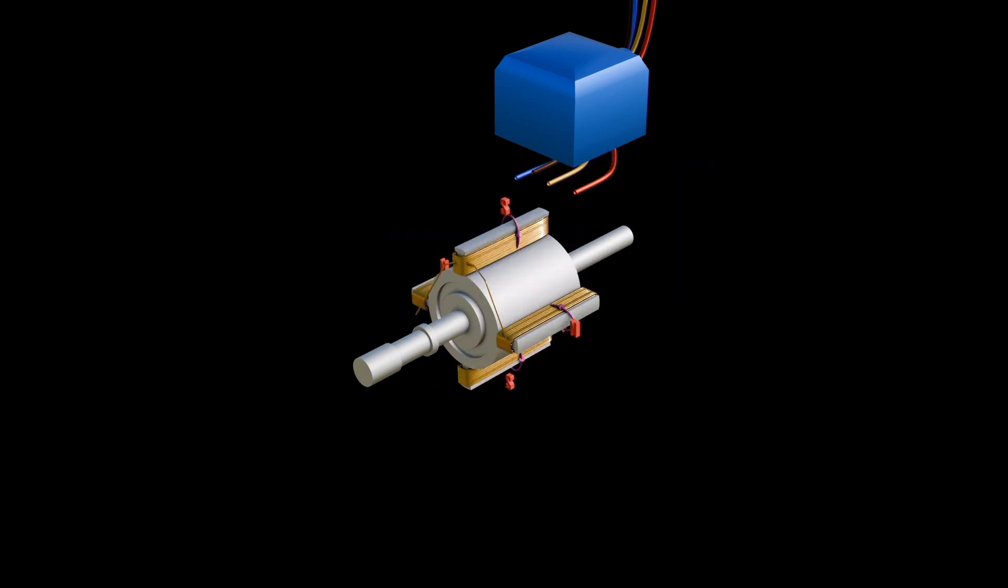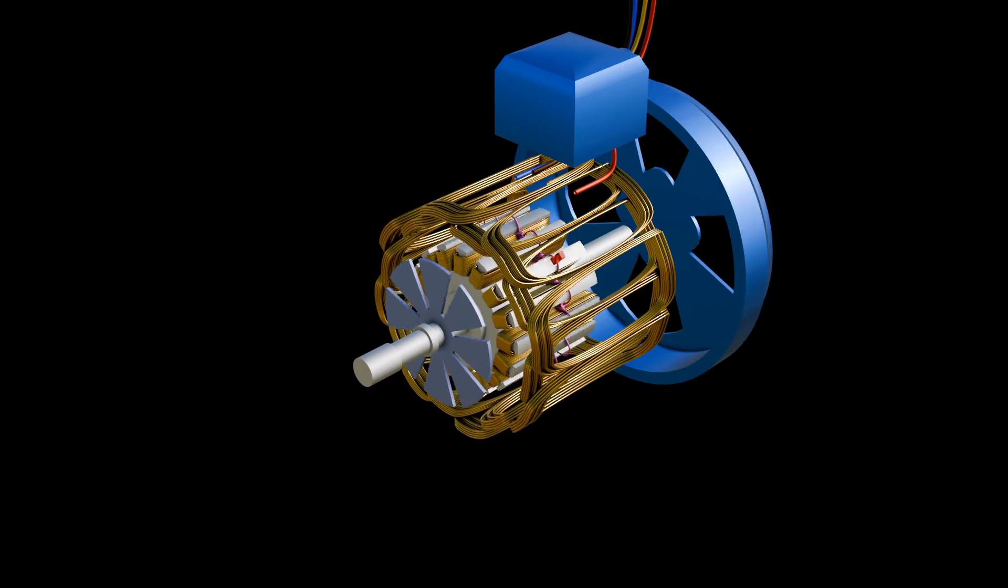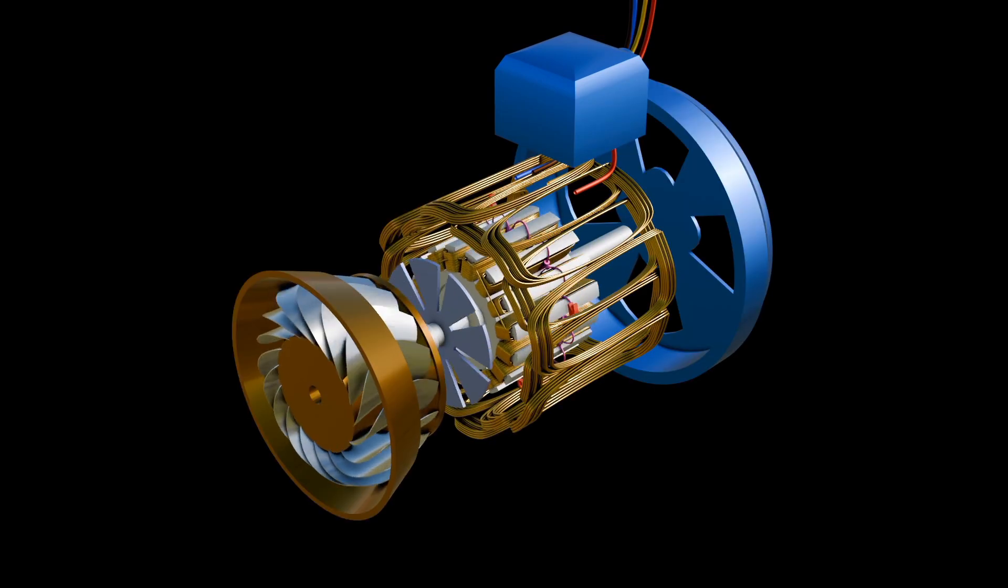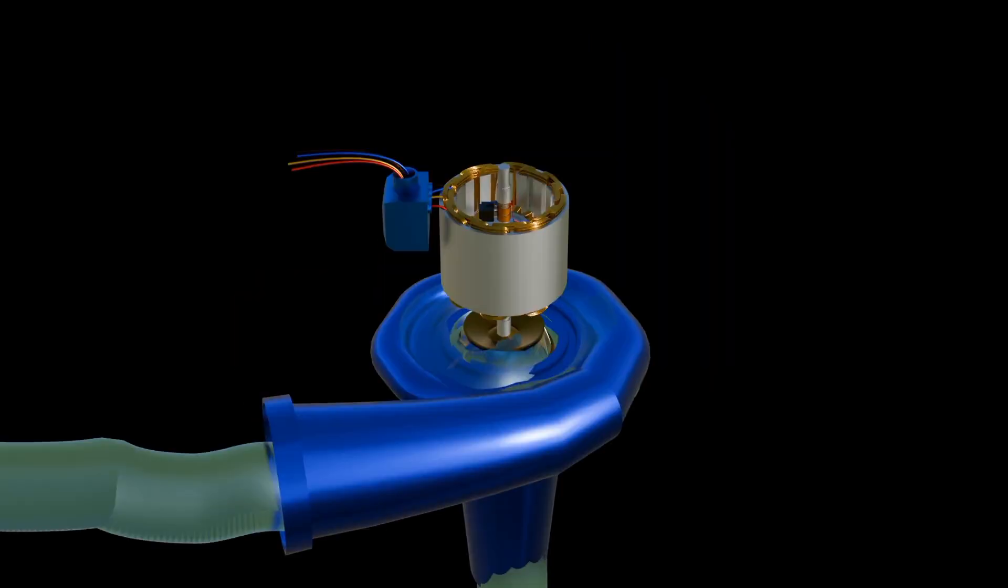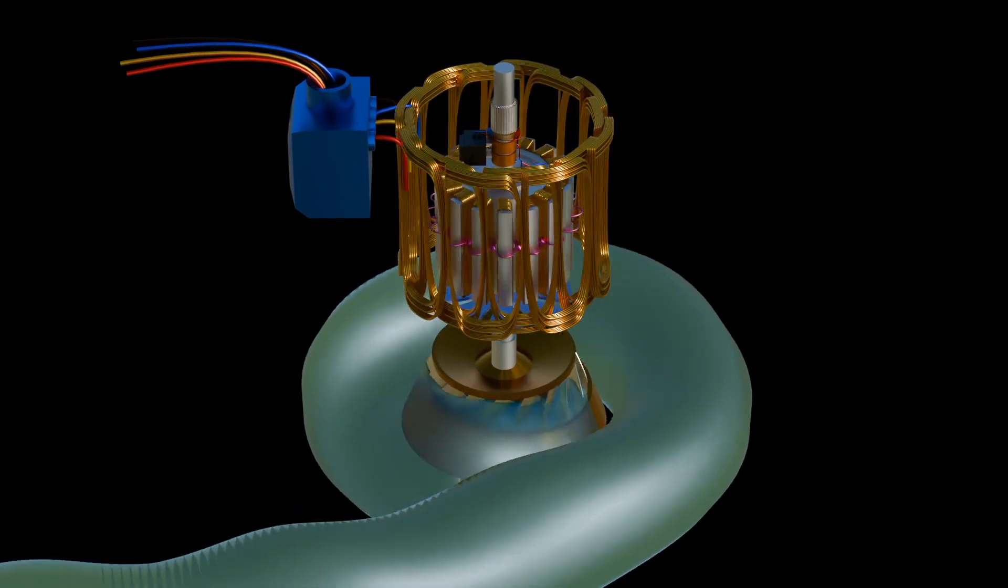The rotor, which has induced magnetic fields, must have a prime mover, which is usually a turbine. Turbines, for example Francis turbines, have a special shape that enables water to rotate them.